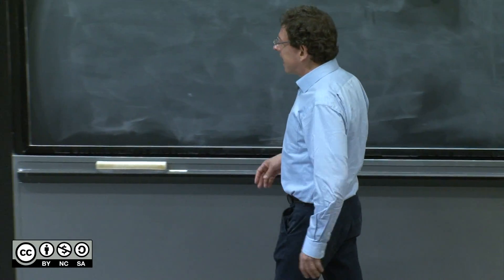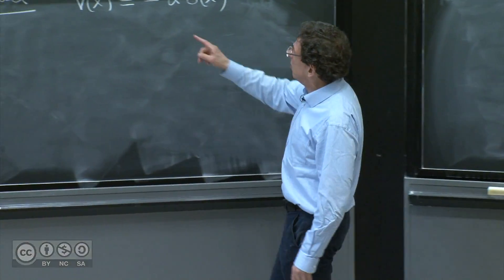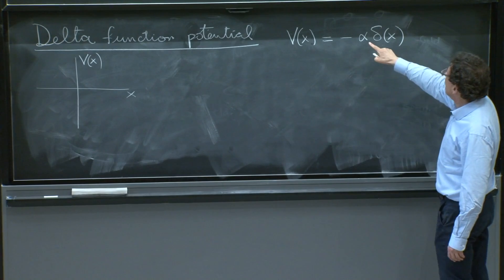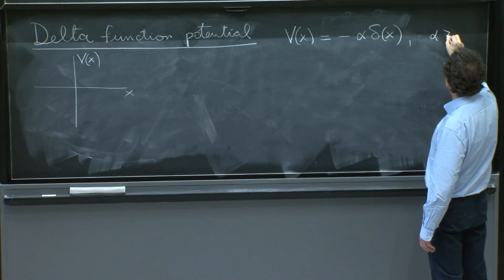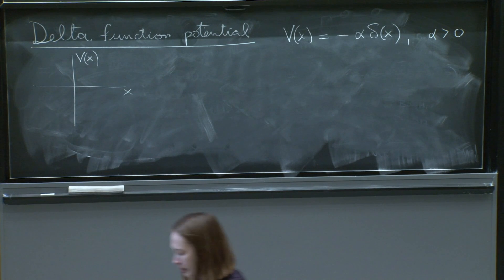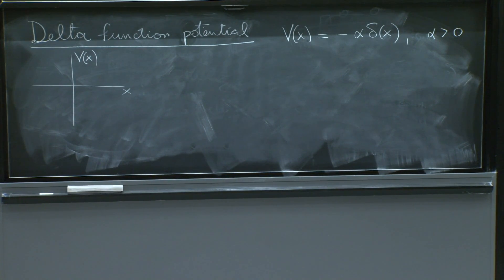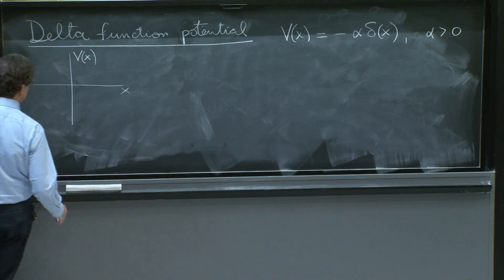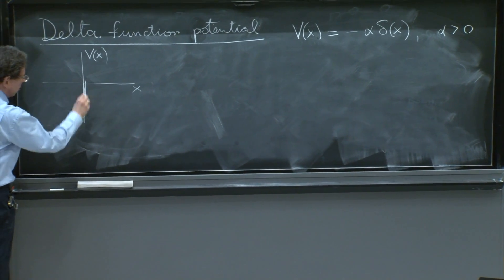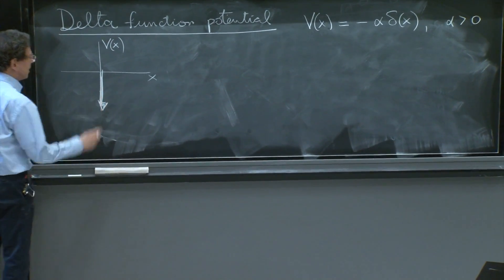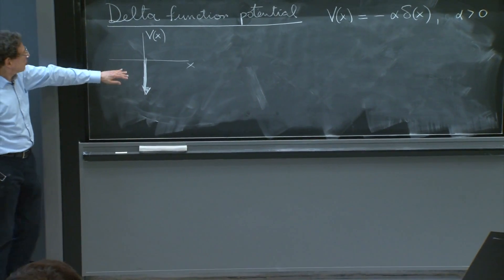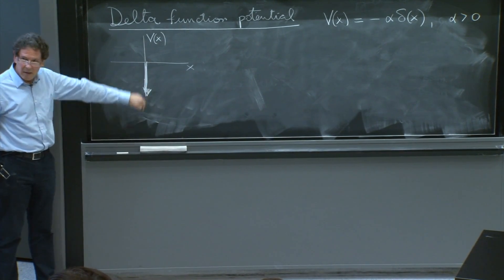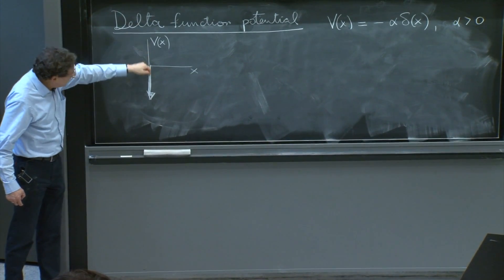Delta function potential. So it's still a one-dimensional potential, a function of x. We'll write it this way: V(x) = -α·δ(x), where α is positive. This is a delta function in the negative direction, a potential that is rather infinite at x equals 0, but infinite and negative.